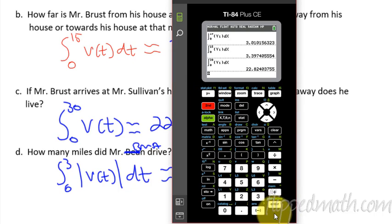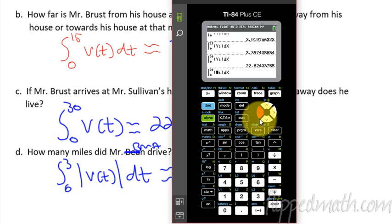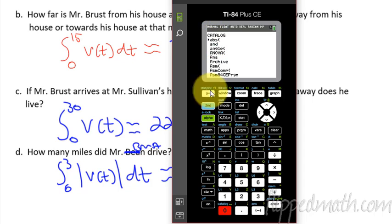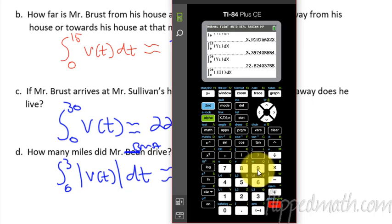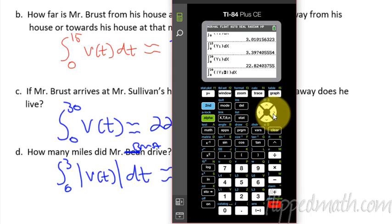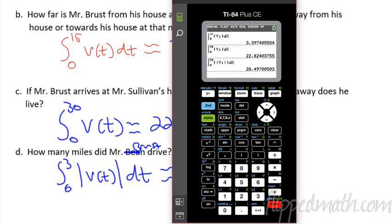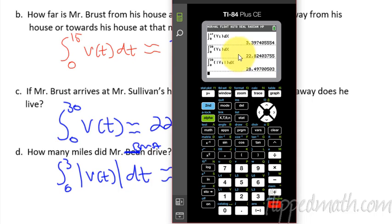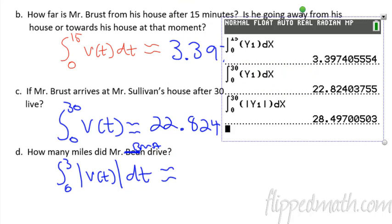And then we're going to say that is approximately. Okay, so how do I do that? Let's go second enter again. But now, oh, let's see here. Y1, we need to put second catalog. Second catalog, the very first option is absolute values. Absolute value. Now I need the Y1 there. So variables, Y variables, first option is function, and Y1. Now I've got my velocity function in absolute value brackets. 28.497. Let me just click and drag this over here because I might forget. 28.497. So 28.497 miles.